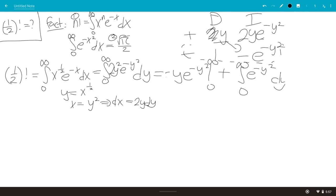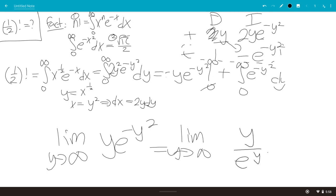When we plug in 0, we get 0, and then we plug in infinity. So this would be... So the limit as y goes to infinity of y e to the minus y squared is the limit as y goes to infinity of y over e to the y squared.